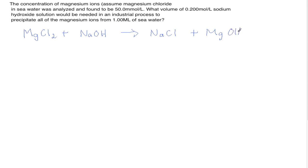However, the charge of magnesium is +2 and the charge of hydroxide is −1, so we need to balance the charges by putting brackets around the hydroxide ions with a subscript of 2, giving Mg(OH)₂.